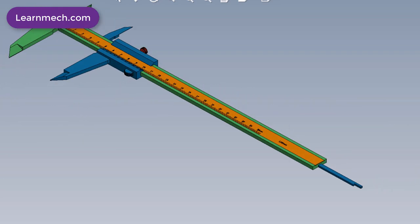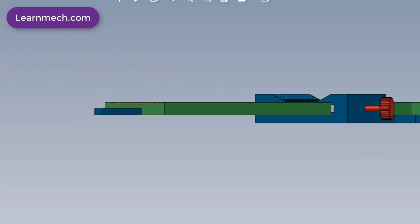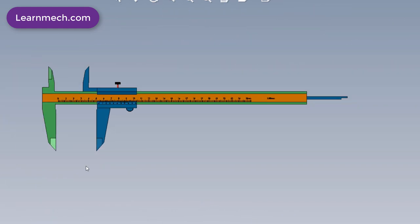The Vernier Caliper is a precision instrument that can be used to measure internal and external distances extremely accurately. The example shown here is a manual caliper.